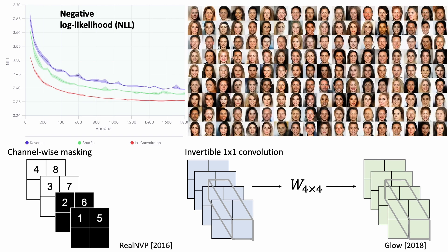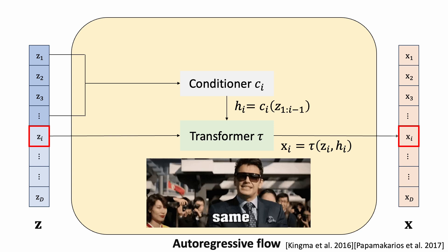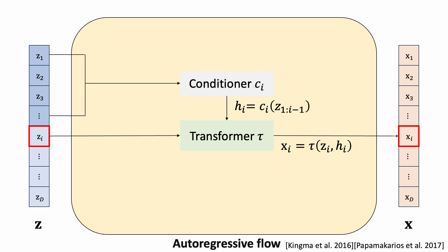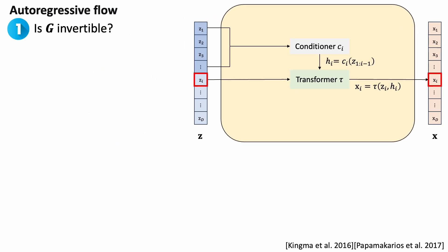Another example is auto-regressive flow. To generate the value of the i-th position, you use the input vector before the i-th position to compute the condition h, and use it to transform zi to xi using an invertible function tau. Note that this transformer has nothing to do with the transformer we use today in language modeling. We can generate all the outputs following this strategy. If the transformer tau is invertible, we can find the corresponding input z, but this process is sequential. Fortunately, the forward sampling process can be easily parallelized.